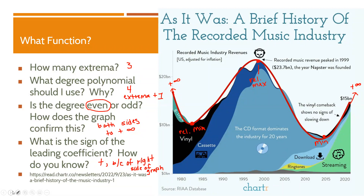I have the two ends of the graph headed towards positive infinity, three extrema, and these swooping curves that all fit the polynomial shape.